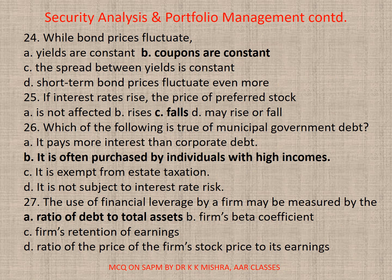Question 24: While bond prices fluctuate — correct option is D — coupons are constant. Question 25: If interest rates rise, the price of preferred stock falls. Question 26: Which of the following is true of municipal government debt? Correct option is D — it is often purchased by individuals with high incomes. Question 27: The use of financial leverage by a firm may be measured by — correct option is A — the ratio of debt to total assets.